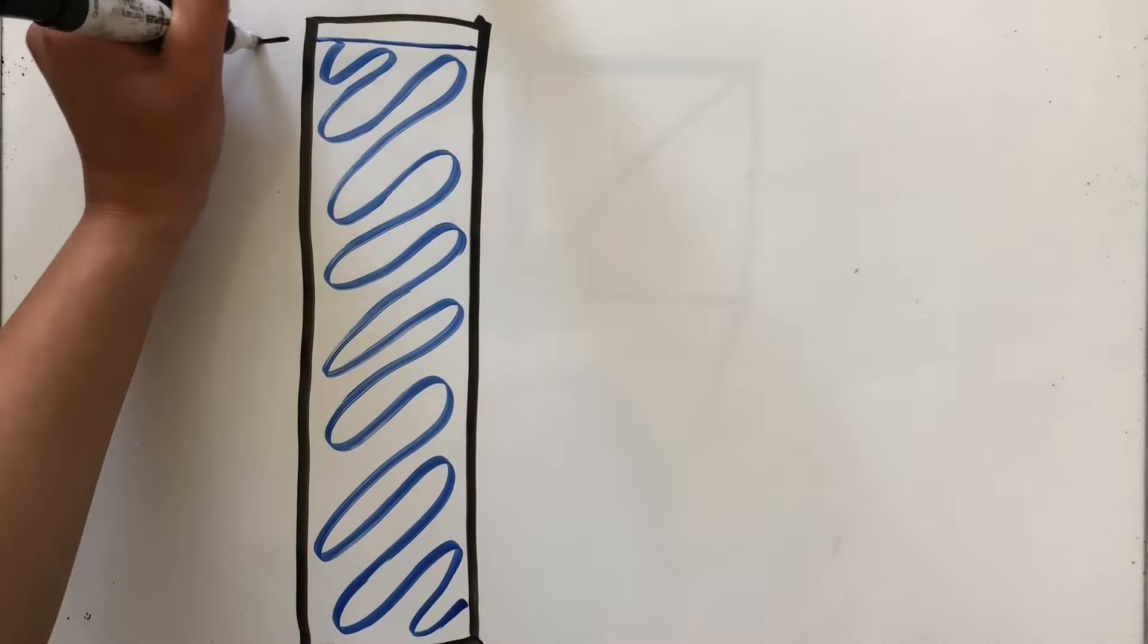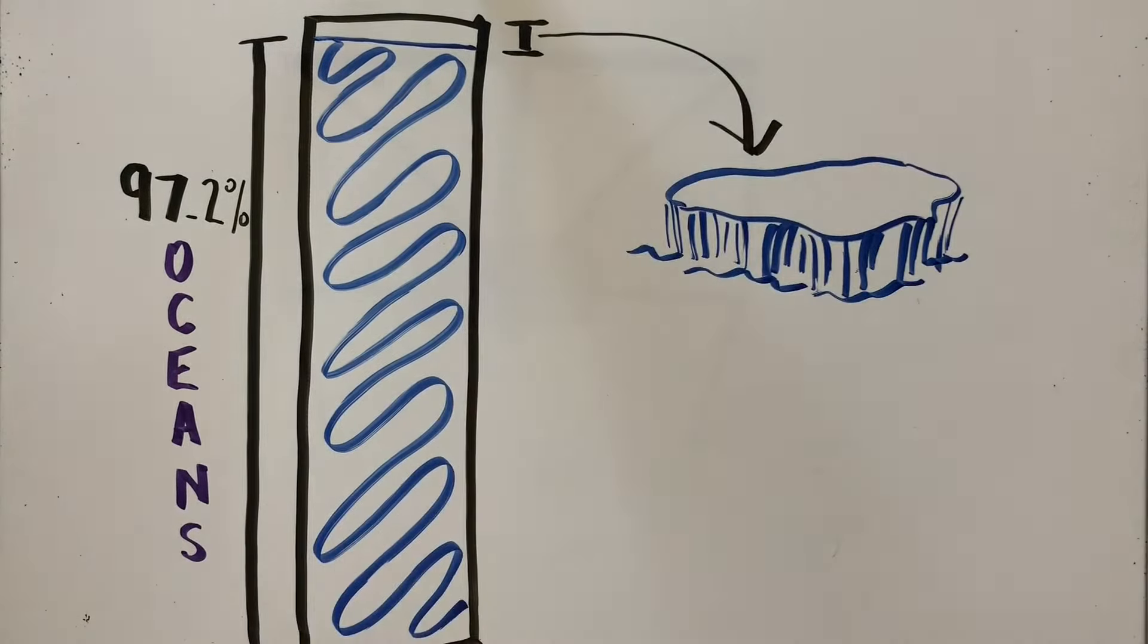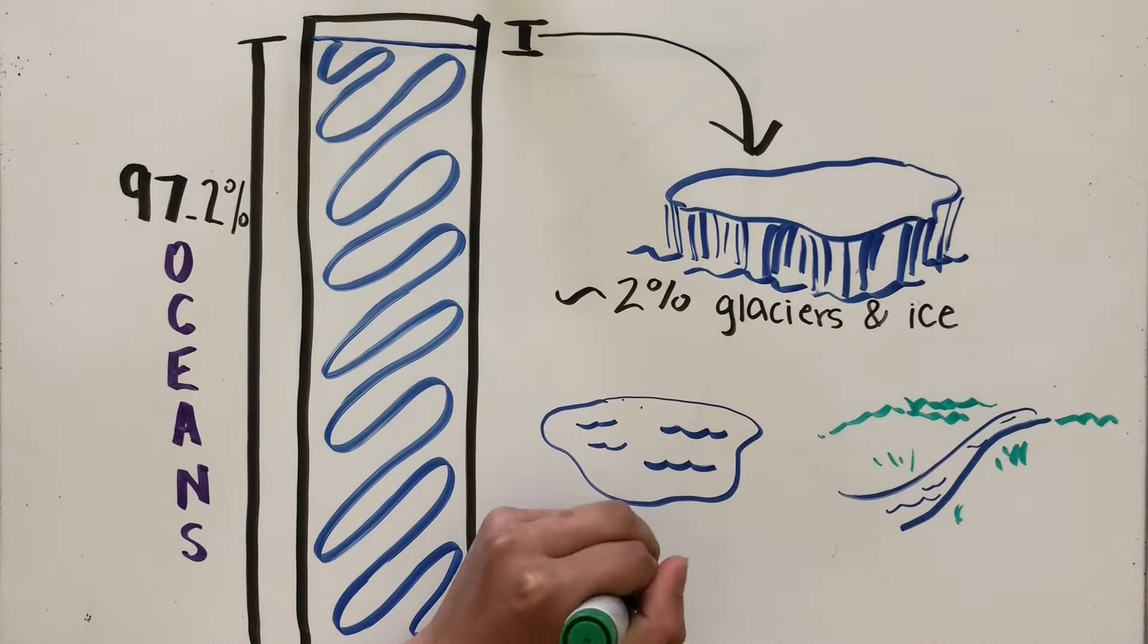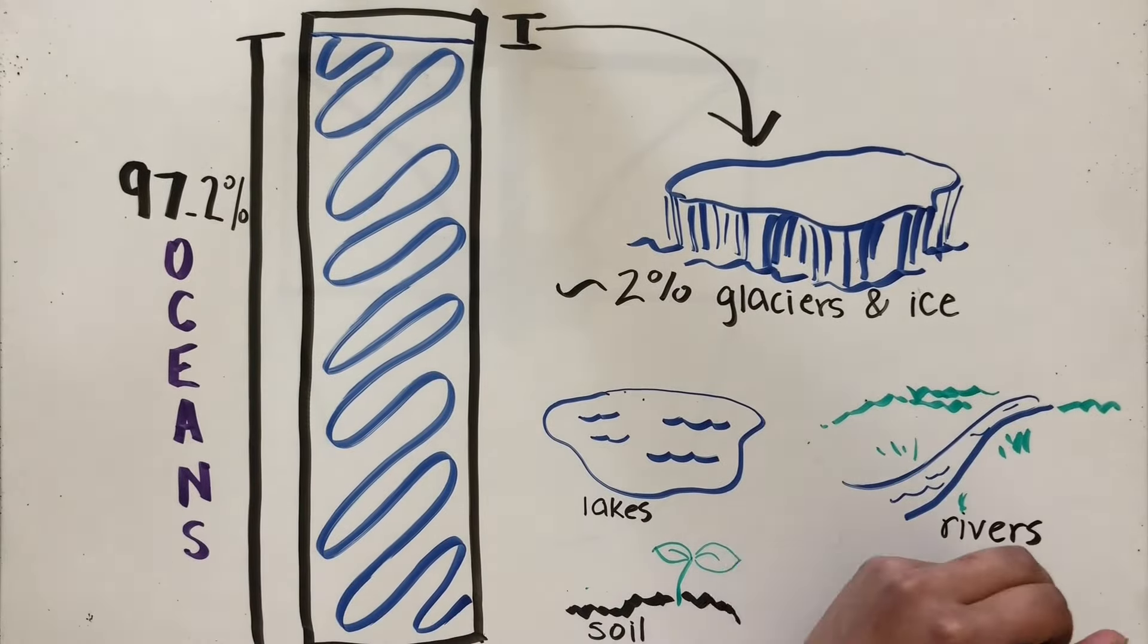A staggering 97.2% of Earth's water is found in our oceans. Just over 2% is found in our glaciers and other ice. The rest of Earth's water, which is less than 1%, is found in lakes, rivers, our soil, atmosphere, and groundwater.